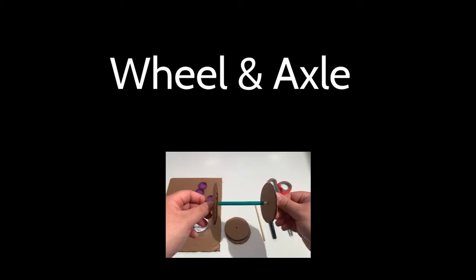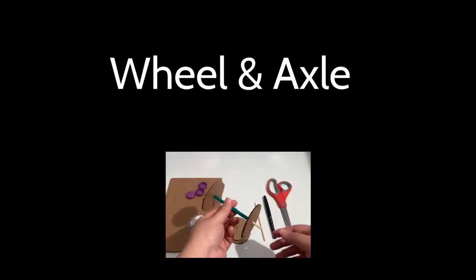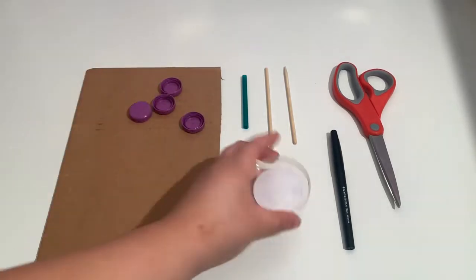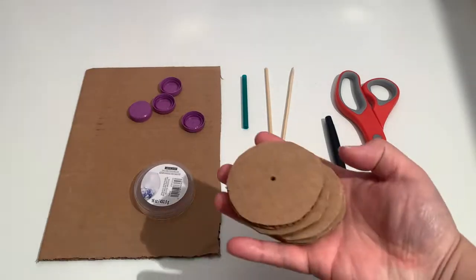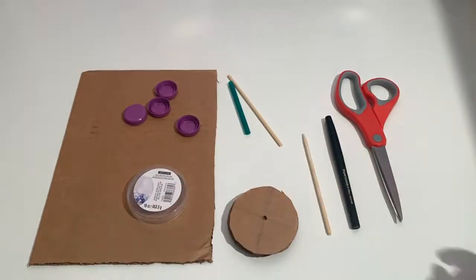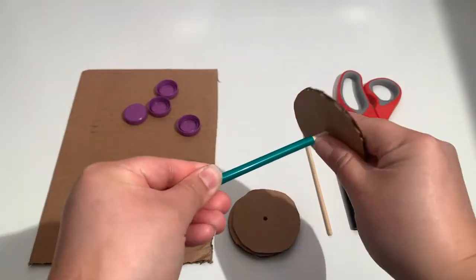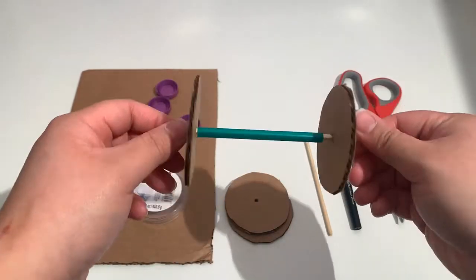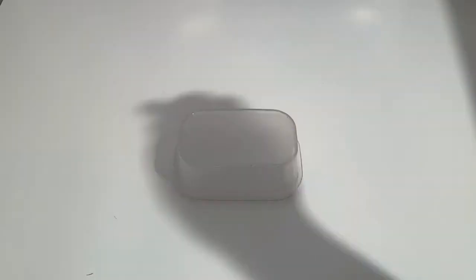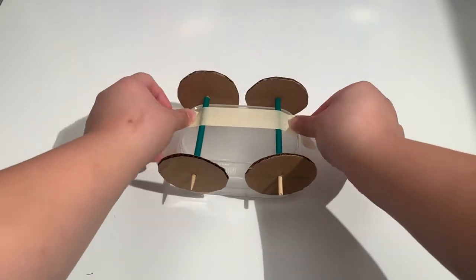A wheel and axle is a circular object revolving around a central shaft which reduces friction allowing the object to move easier. Use bottle caps, round container lids, or create wheels from cardboard. Attach your wheels to a bamboo skewer and then create the axles with a straw. Then attach your set of wheel and axles to a container to make your cart.